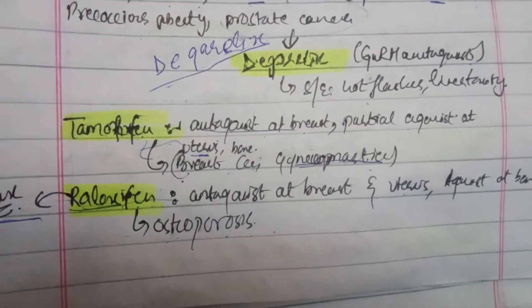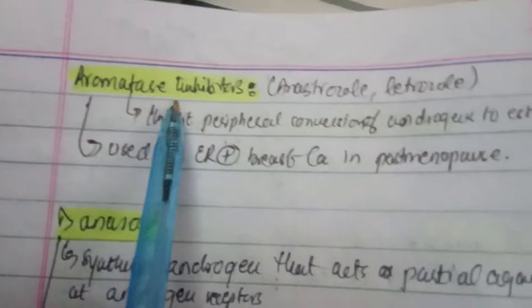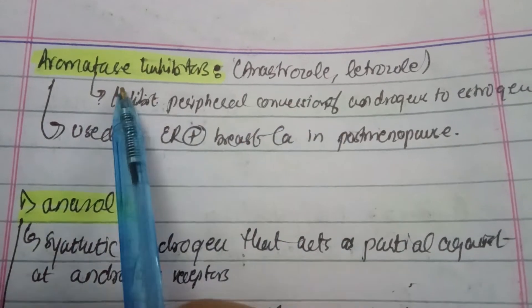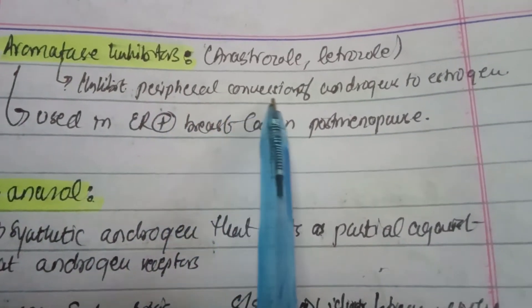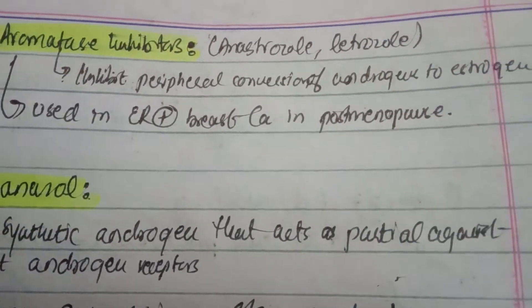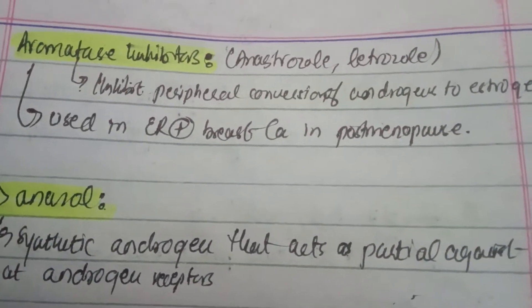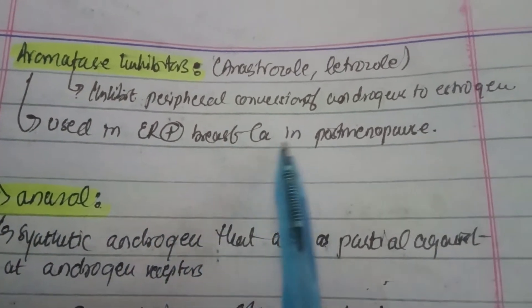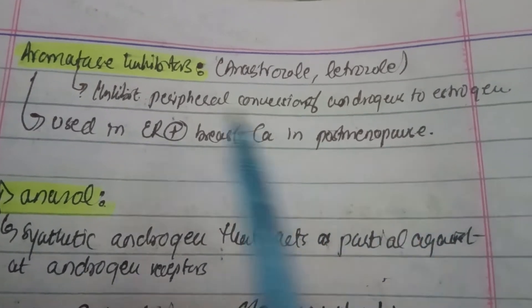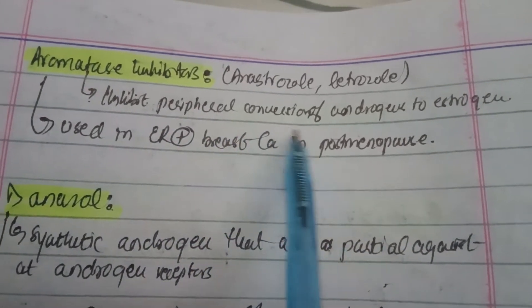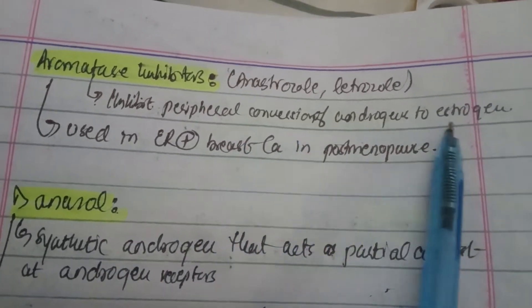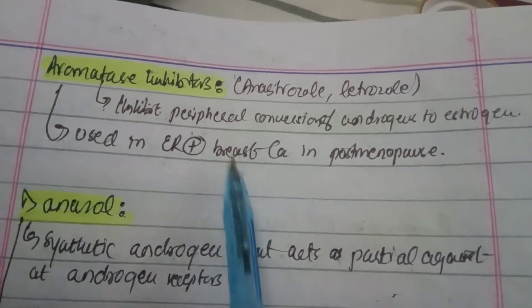Aromatase inhibitors — examples are anastrozole and letrozole. They inhibit the peripheral conversion of androgens to estrogen. Since aromatase converts androgens to estrogen, these drugs are used in estrogen-positive breast cancer in postmenopausal women, where the main estrogen source is peripheral conversion from adipose tissue. Blocking this decreases the estrogen source.